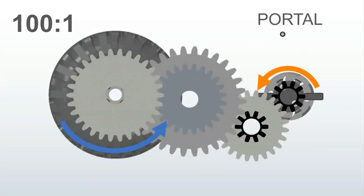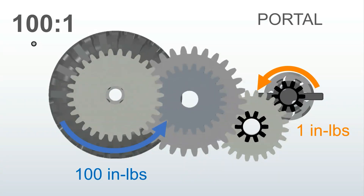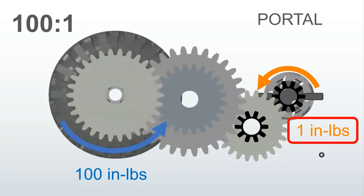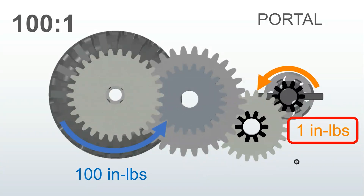Now let's assume we have a portal axle — let's assume a 2 to 1 reduction in the portal axle itself, just to keep things simple. Stock Capra is actually 1.9 to 1, and if you have overdrive gears you might get down to 1.3 to 1. But just to keep the illustration simple, let's say it's a 2 to 1 reduction. So on a straight axle we had 50 to 1; now we're at 100 to 1. Maintaining 100 inch-pounds at the axle, you only need half as much force, which is now down to 1 inch-pound. Remember, it was 2 inch-pounds on the straight axle. So with half the motor force, you're going to have half the reduction force, which means half the torque twist.